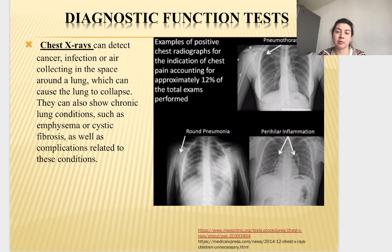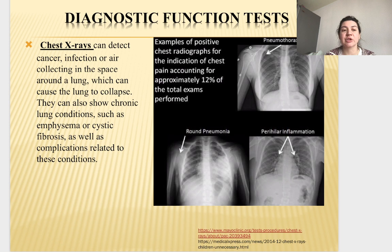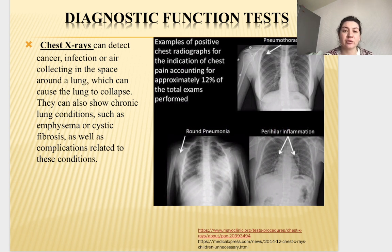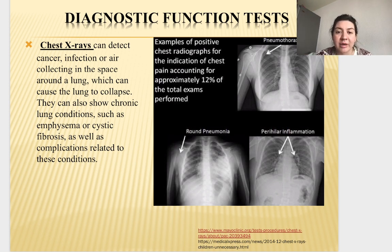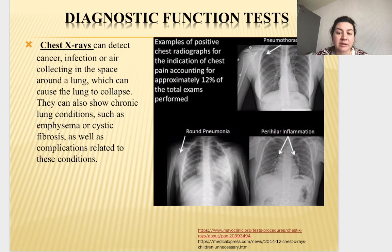For confirming the causes of broncho-obstruction we use visualization. Chest X-ray can detect cancer, infection, air collection around a lung causing lung collapse, and can show chronic lung conditions such as emphysema or cystic fibrosis. Examples of positive chest radiographs are shown, accounting for approximately 12% of total exams performed — including a picture with pneumothorax, and another with a round phenomenon and perihilar inflammation.